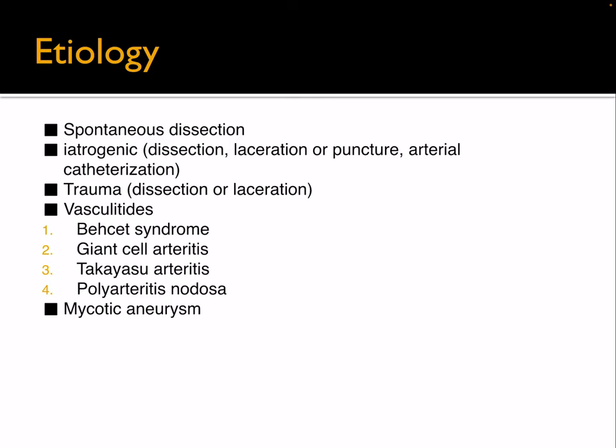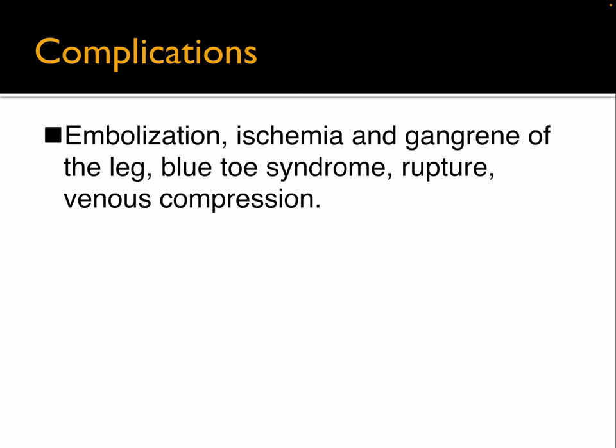Pseudoaneurysm can be due to spontaneous dissection; iatrogenic causes — most common being arterial catheterization; trauma; or inflammatory conditions like vasculitis, giant cell arteritis, polyarteritis nodosa, and mycotic aneurysm. Complications can involve embolization, ischemia and gangrene of the leg, blue toe syndrome, rupture, and venous compression.